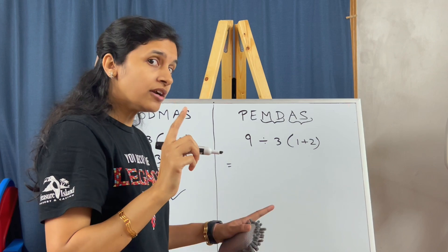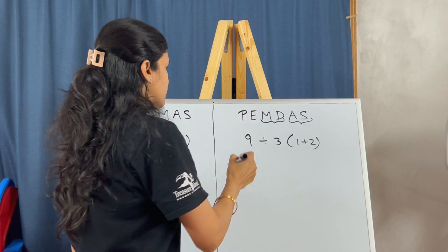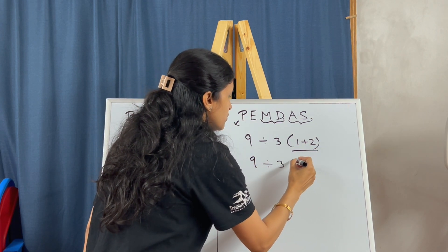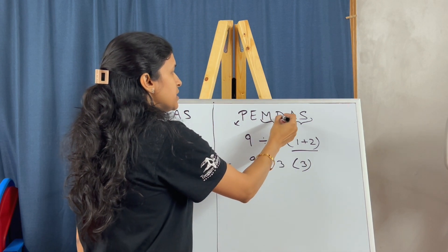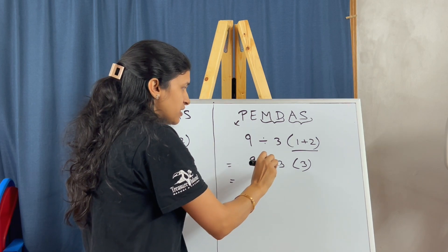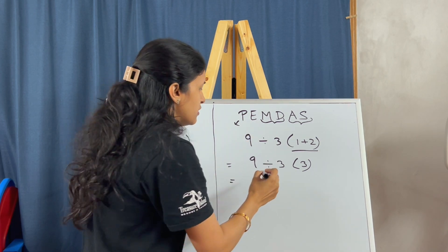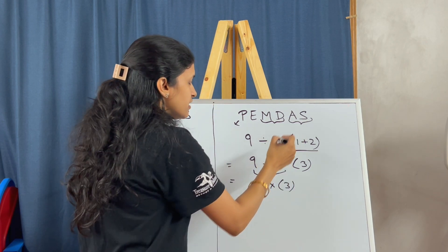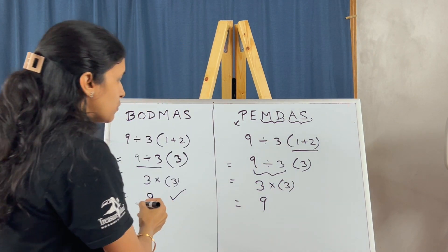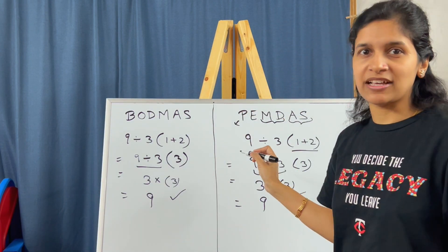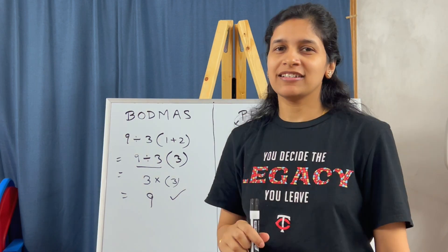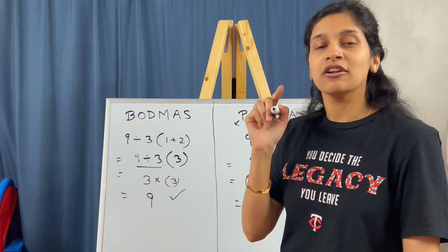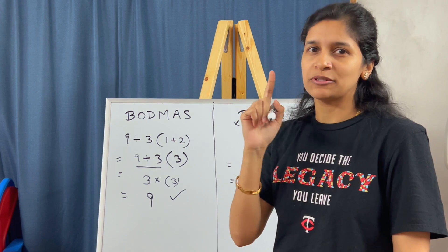Now with PEMDAS using our correct understanding — Multiplication or Division, left to right. First, Parentheses: 1 plus 2 equals 3. Then looking left to right, Division comes first: 9 divided by 3 equals 3. Then Multiplication: 3 times 3 equals 9. Both BODMAS and PEMDAS give us the same result. Do not make the mistake of taking multiplication first — the concept is left to right, whichever comes first.